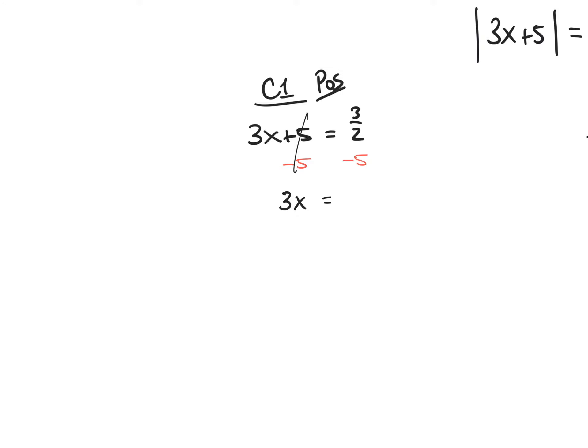I'm recommending the TI-36X Pro — it's very user-friendly. When you plug it in you get negative 7 over 2. Now the last step: I'm not a fan of division when one of my numbers is a fraction, so I'll use multiplication by the reciprocal.